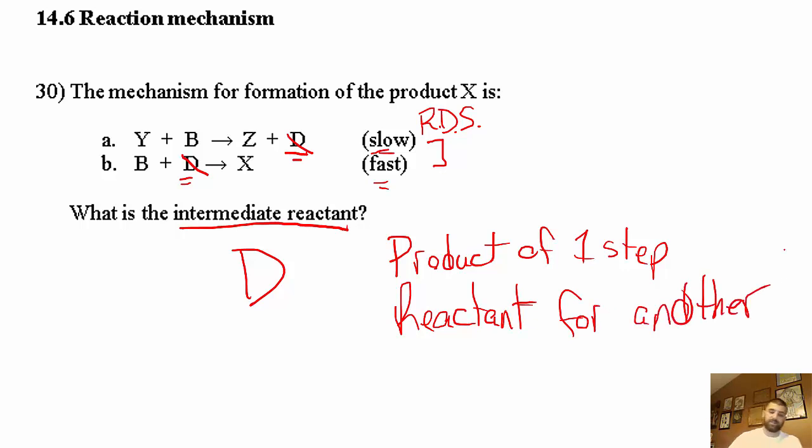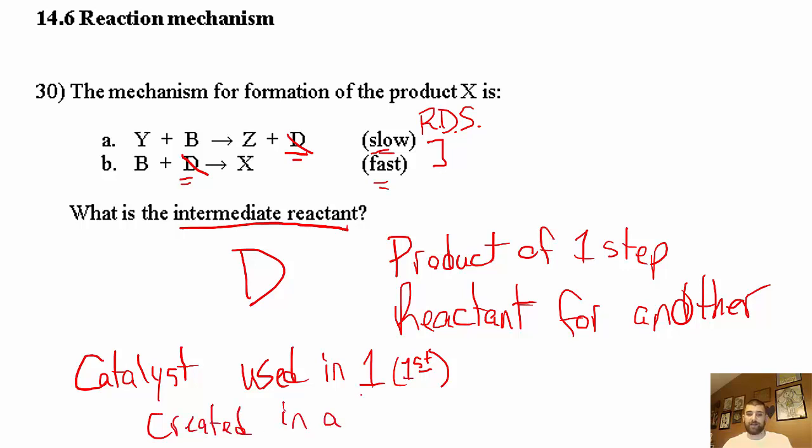That's how you can tell what an intermediate is. A catalyst is used in one step first and then created in a later step, so you're not losing any of it.